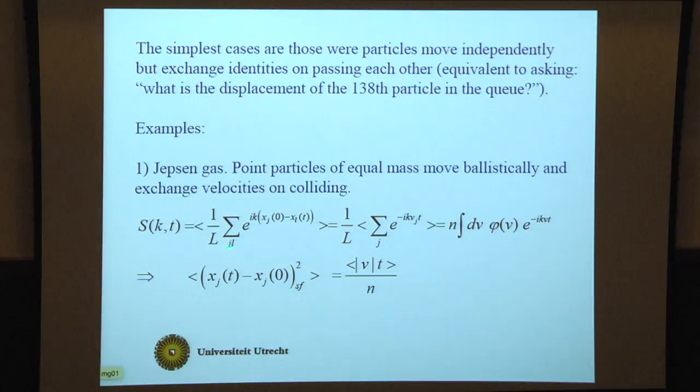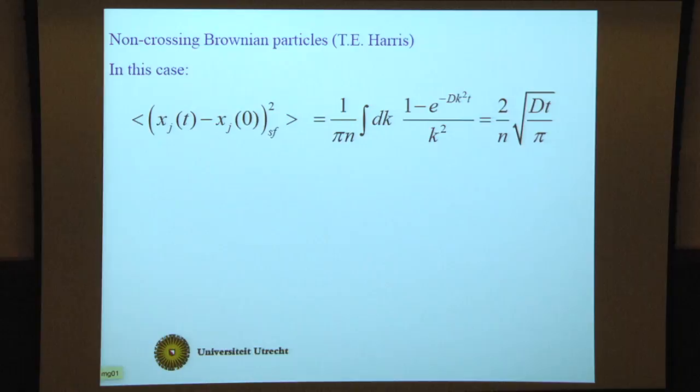In that case S(k,t) is the sum over j of e^(-ikv_j*t), which can be written as an integral density times the stationary velocity distribution e^(-ikvt). If you stick that into the expression for S(k,t), you find the expectation value of |v|*t divided by density, which is a well-known result since Jepsen, but you get it in a very easy way from this formalism.